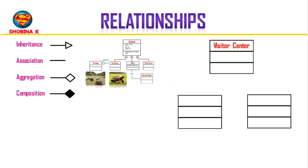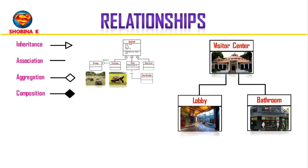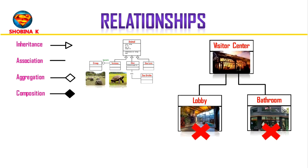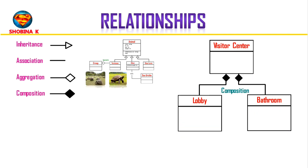There is also a relationship where a part can't exist outside the whole — it's called composition. To illustrate this, let's create a few new classes. We have several different visitor centers in our zoo, and each visitor center has a lobby and a bathroom. If one of our visitor centers was torn down, the lobby and bathroom of that visitor center would be destroyed as well — those rooms could not exist apart from the visitor center. That is called composition: a child object will not be able to exist without its parent object. We note a composition relationship with a closed diamond.